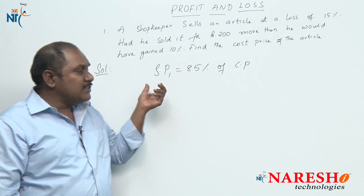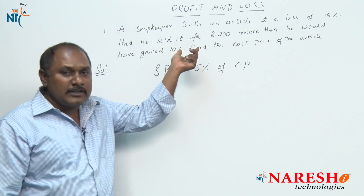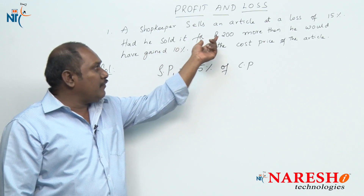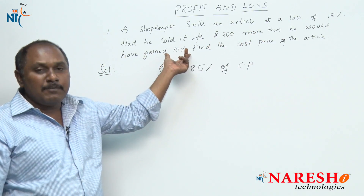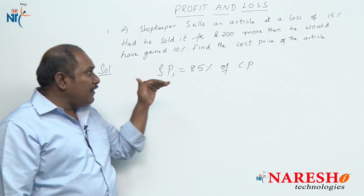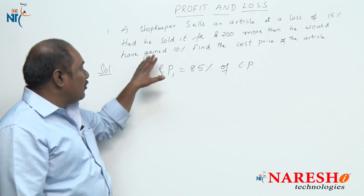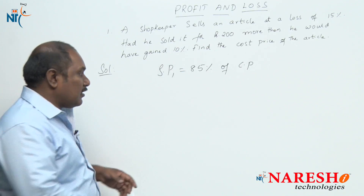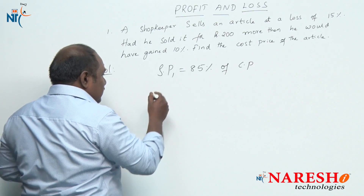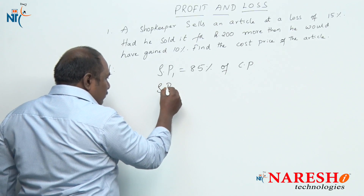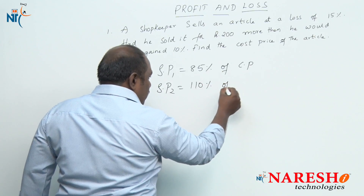Then there is a conditional statement: had he sold it for rupees 200 more, then he would have gained 10 percent. That means if he increases his selling price by 200 rupees, then he would have made a profit of 10 percent. So after increasing by 200 rupees, the new selling price should be 110 percent of cost price.